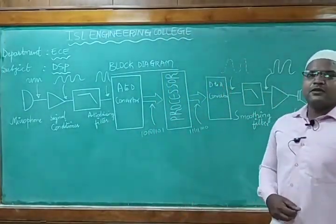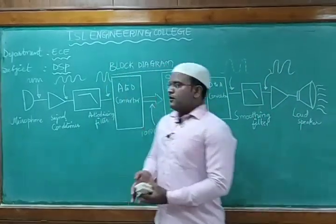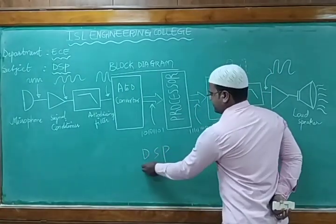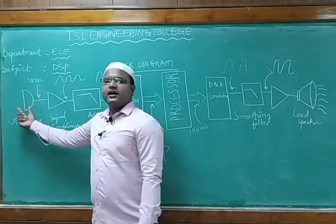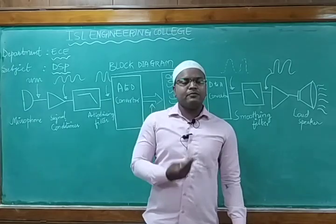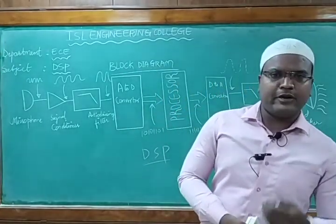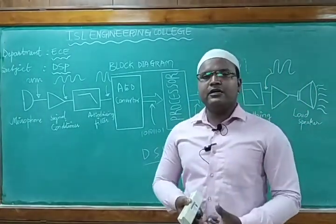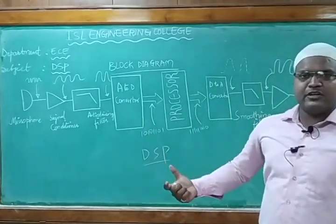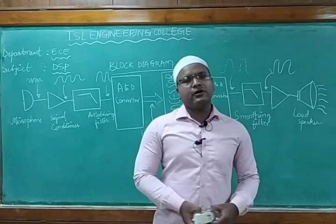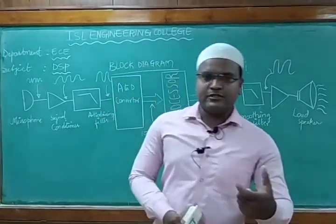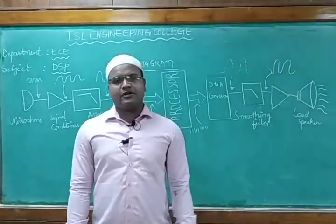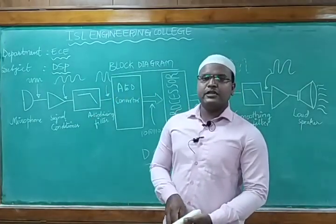Let us see what the block diagram consists of. We are starting our block diagram with a microphone. The reason I am taking the example of a microphone is — whatever I am speaking, you can hear from the speaker. So we are going to see the function of a microphone, how it works in signal processing, what type of signal we are passing to it, and how it works as a signal processor. For understanding this better, we will see the complete block diagram of digital signal processing.